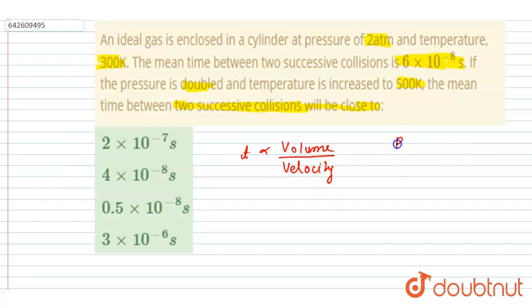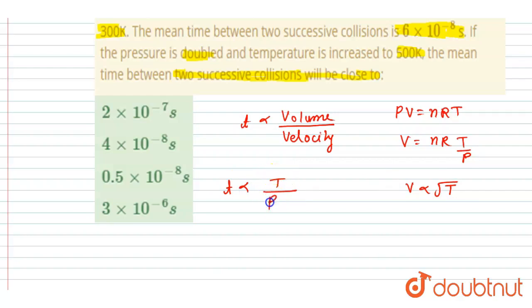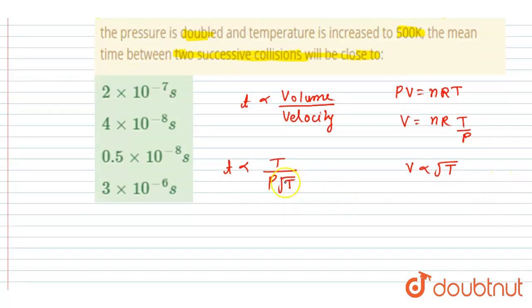From the gas equation, PV equals nRT, so volume is proportional to T/P. And velocity is proportional to the square root of temperature. Substituting these, mean time is directly proportional to T/P into under root T, which simplifies to mean time being directly proportional to under root T divided by P.